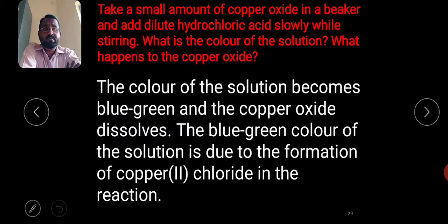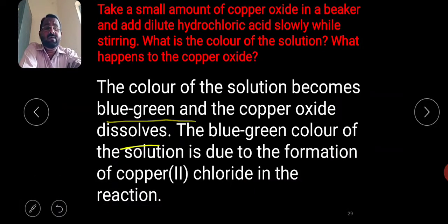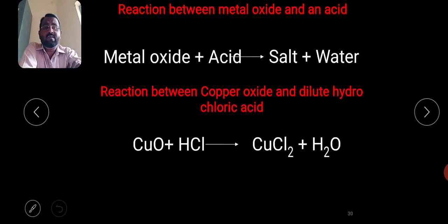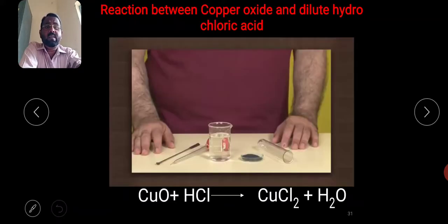Take a small amount of copper oxide in a beaker and add dilute hydrochloric acid slowly while stirring. The color of the solution becomes blue-green and the copper oxide dissolves. The blue-green color is due to the formation of copper chloride. The equation: CuO + HCl → CuCl₂ + H₂O. Metal oxide reacts with acid to give salt and water.